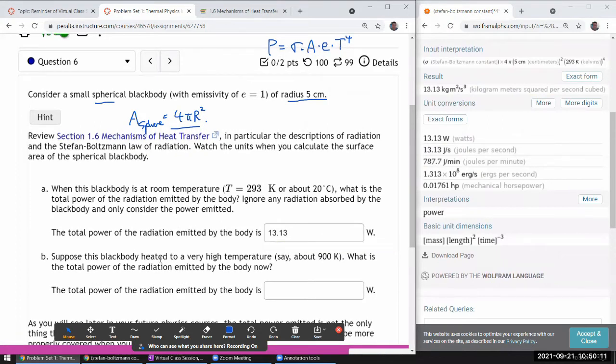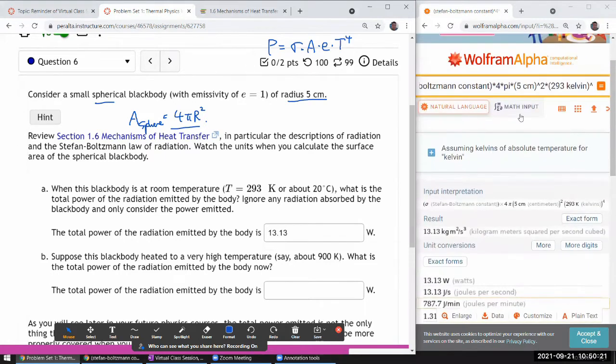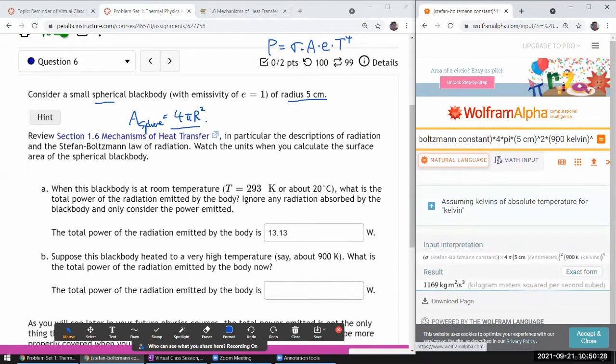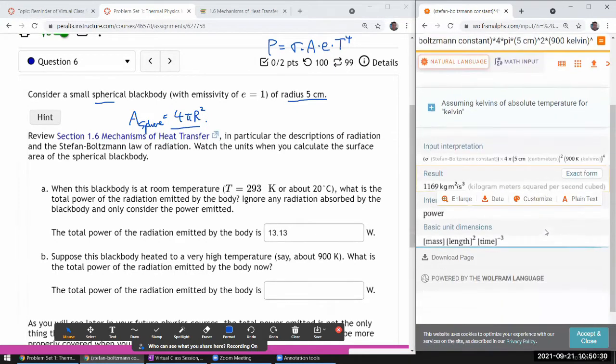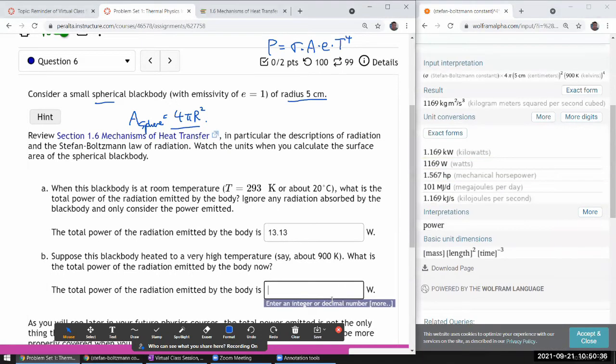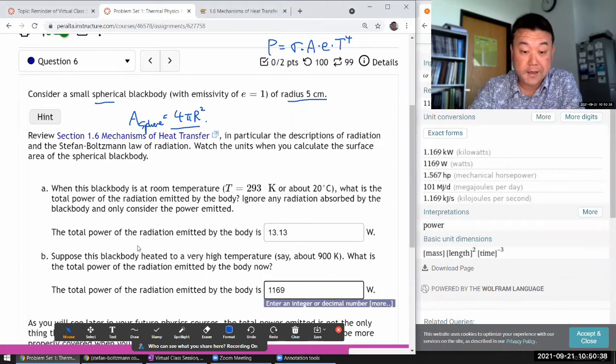Okay, suppose this black body is heated to a very high temperature, say about 900 Kelvin. Okay, that's not very high. But, all right, it's hot enough that it could injure you if you touched it. Let's see what it is now. Huh, a lot higher. 1169 Watt. A lot higher.